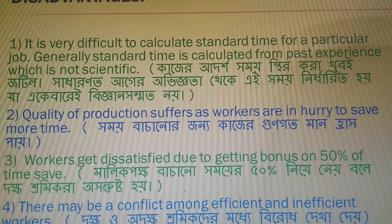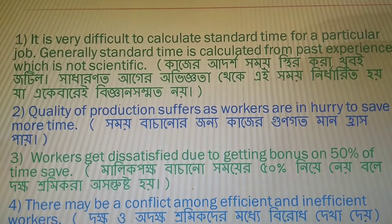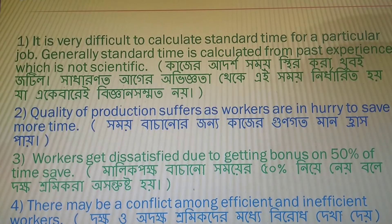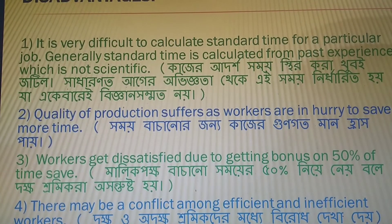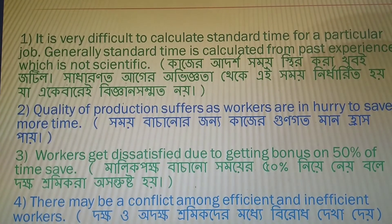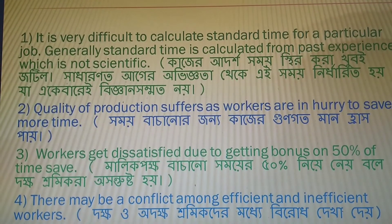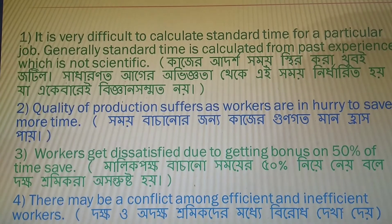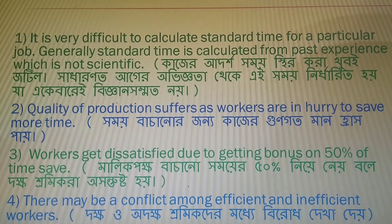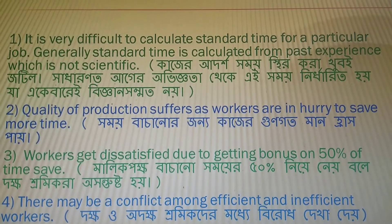The second disadvantage is that a worker who is not very efficient may try to do his job very quickly just to save time and earn more bonus. In that case, the quality of the product will suffer. So in this system, quality of product suffers as workers hurry to save more time.